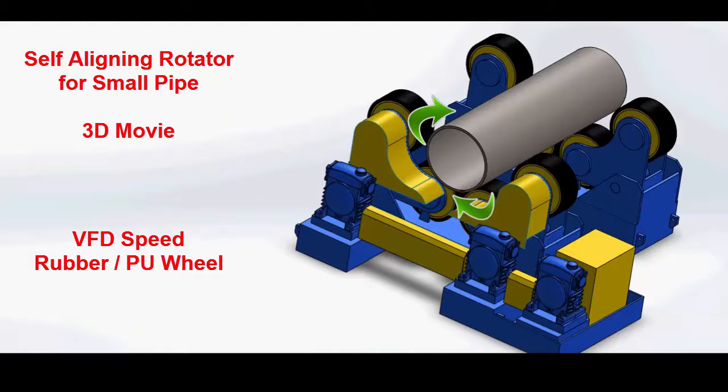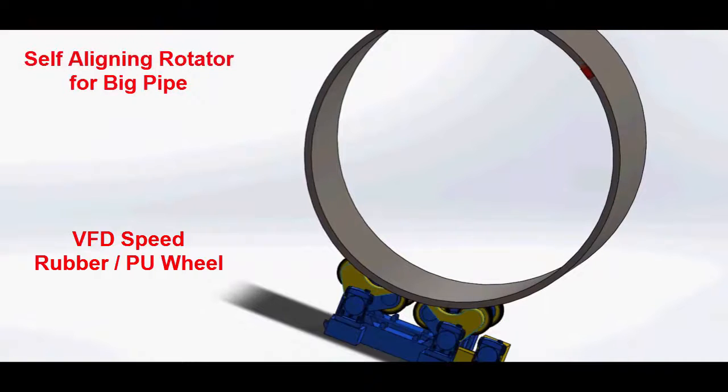The self-aligning rollers, which maintain a constant centerline, can rotate workpieces with diameters as small as 12 inches and as large as 16 feet without adjustment or change of drive shafts.